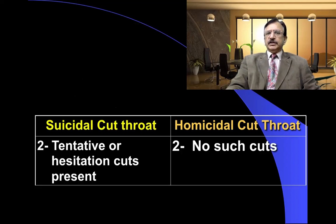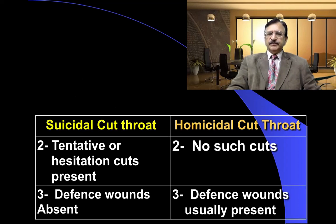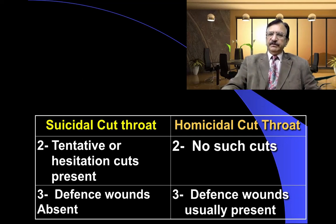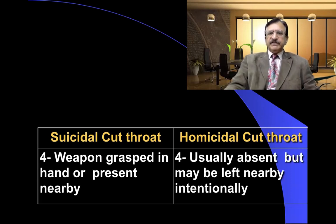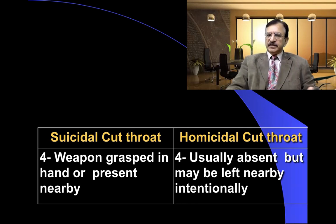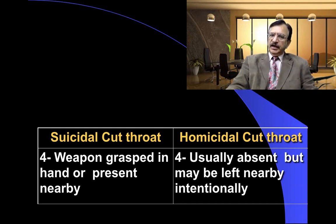In suicidal cutthroat there may be tentative or hesitational cuts, but in homicidal there are no such cuts. In suicidal cutthroat there are no defence wounds, but in homicidal cutthroat, if the person is aware and awake, he will definitely try to defend himself and there will be defence wounds found on other parts of the body. In suicidal cutthroat, the weapon is usually grasped in the hand or present nearby, whereas in homicidal cutthroat it is usually absent, though sometimes left intentionally to avert suspicion.